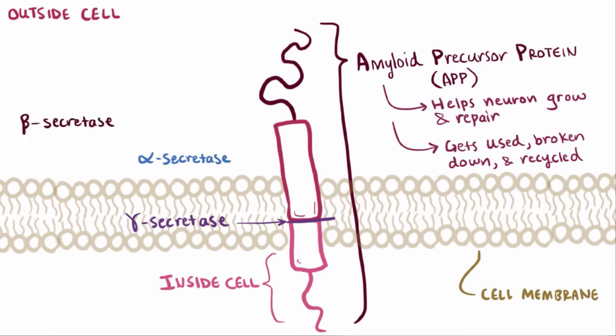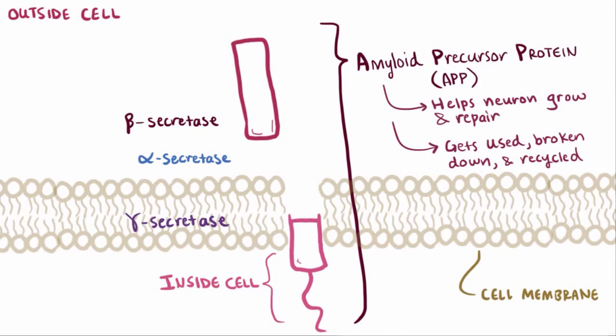If another enzyme, beta-secretase, teams up with gamma-secretase instead, then we've got a problem. And this leftover fragment isn't soluble and creates a monomer called amyloid beta.